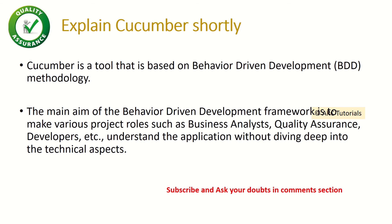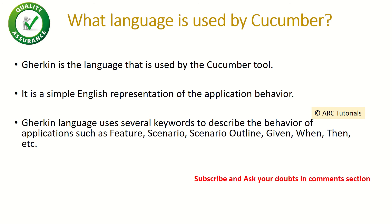What language is used by cucumber? Cucumber framework uses Gherkin as its language. It is a simple English representation of the application behavior — for example, 'click login to application' or 'enter the username'. Gherkin uses several keywords to describe the behavior of applications such as feature, scenario, scenario outline, given, when, and then. It's a simple and easy way of writing test scripts in plain English.